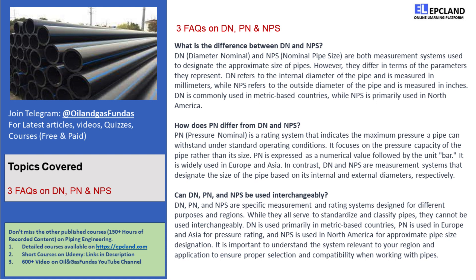On the other hand, DN and NPS are measurement systems that designate the size of the pipe based on its internal and external diameters, respectively. So, while DN and NPS give you information about the size of the pipe, PN tells you about its pressure capacity.